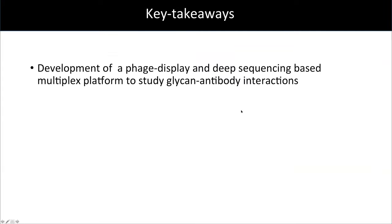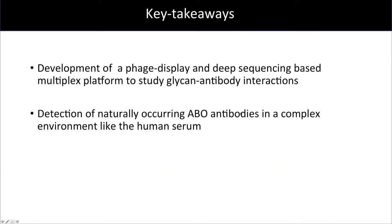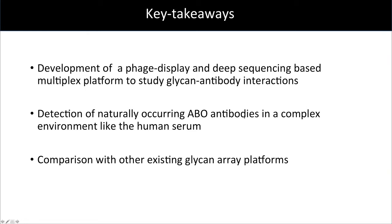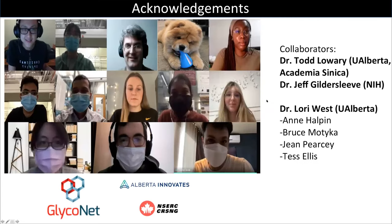Key takeaways from this talk: we developed a phage display and deep sequencing-based multiplex platform to study glycan-antibody interaction. As of now, we've only worked on detecting naturally occurring ABO antibodies in a complex environment like human serum, but we are confident we can extrapolate this to detect antibodies in diseased patients. Comparison with other existing glycan array platforms is underway, and I think that will give us a good idea about how LIGA performs relative to other existing assays. I would like to acknowledge my group, my supervisor Dr. Rathmir Derda, collaborators Todd Lowry's group who made the ABO glycan library, the Gildersleeve group, and Lori West's group who provided serum samples and luminex measurements.